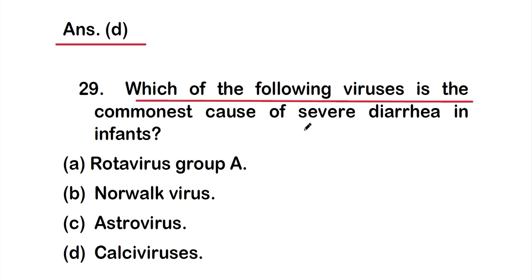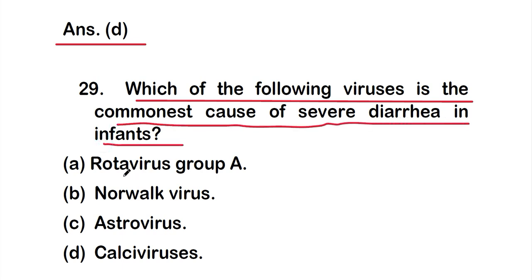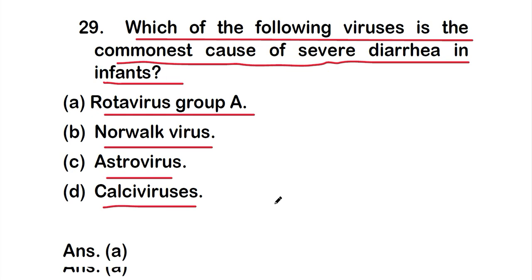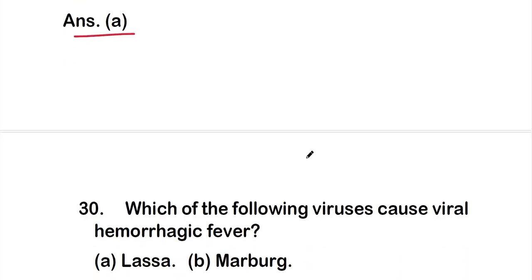Question 29: Which of the following viruses is the commonest cause of severe diarrhea in infants? Option A: Rotavirus group A, option B: Norwalk virus, option C: astrovirus, or option D: caliciviruses. The right answer is option A, rotavirus group A, which is the commonest cause of severe diarrhea in infants.